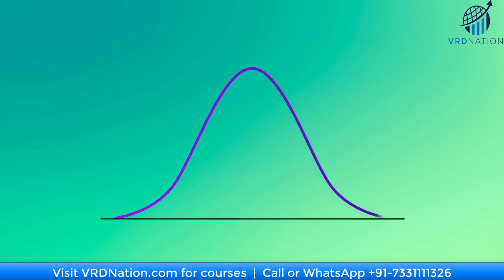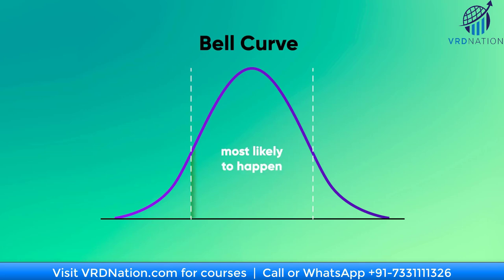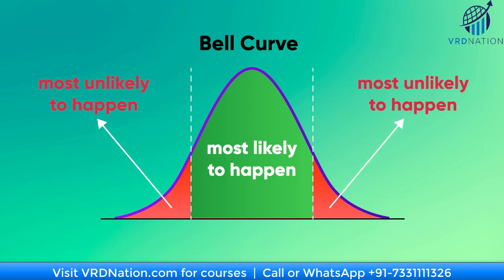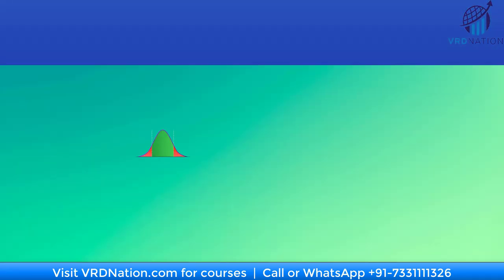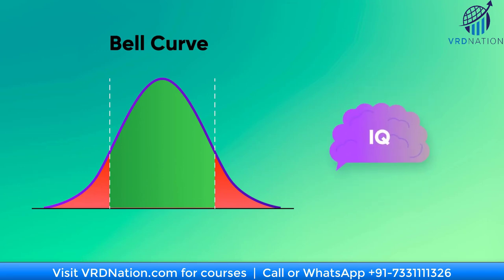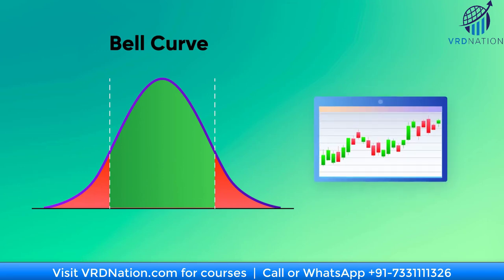And this is the whole philosophy behind the bell curve — to estimate the probability of something happening. What is most likely to happen and what is very unlikely to happen. And this can be applied in all walks of life: to estimate exam scores, IQ level, rolling a dice, and of course the stock market.